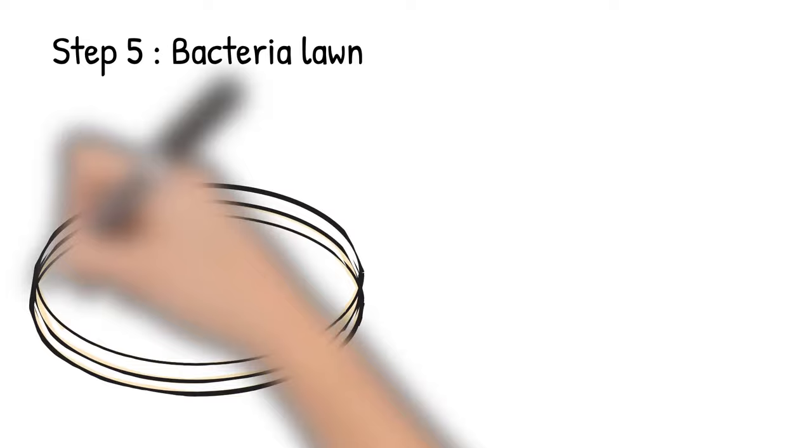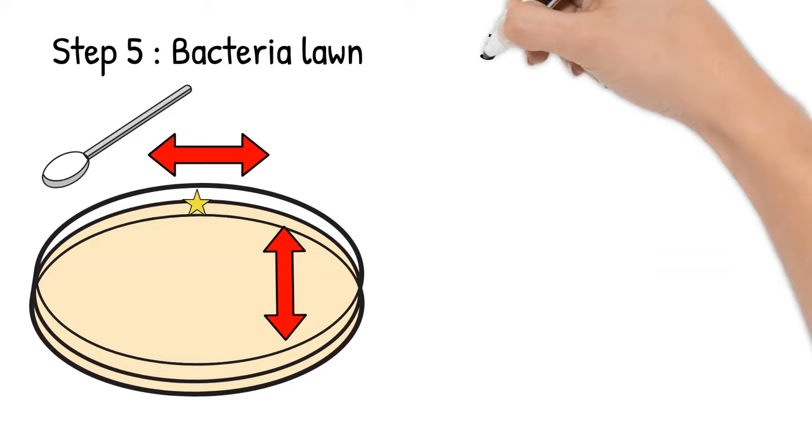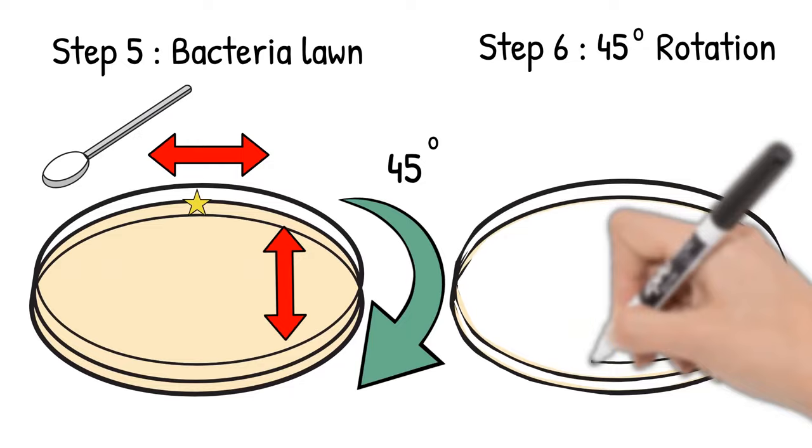Step 5: Make a bacteria lawn by swiping the bacteria from left to right from top to bottom. Step 6: Turn the plate 45 degrees and repeat, swiping the bacteria from left to right from top to bottom.